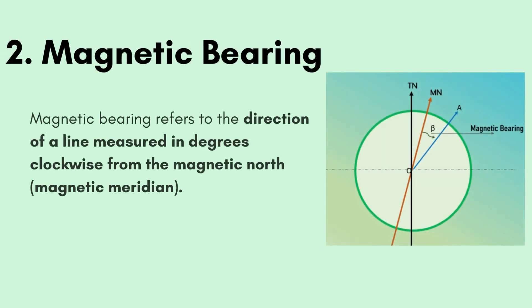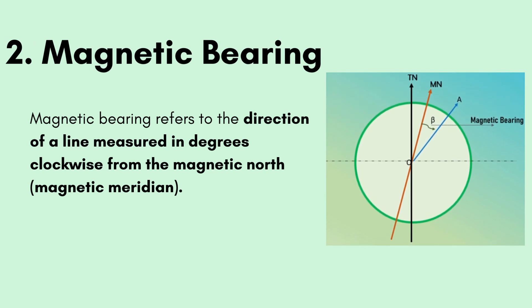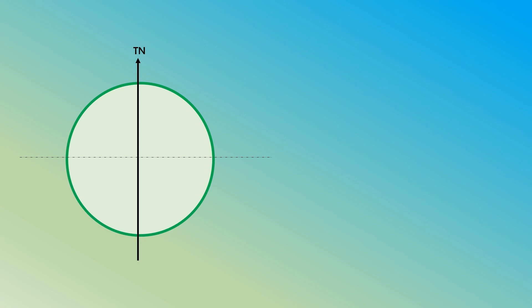Number two is magnetic bearing. Magnetic bearing refers to the direction of a line measured in degrees clockwise from the magnetic north, that is the magnetic meridian. It is a type of bearing that is influenced by the earth's magnetic field, unlike the true bearing explained before. If we are using a magnetic instrument like a compass, the measured bearing will already be a magnetic bearing. As designated in the figure, Tn and Ts are the true meridian and Mn and Ms are the magnetic north and magnetic south forming the magnetic meridian. The line OA makes an angle beta with the magnetic north, and this forms the magnetic bearing angle of the line OA.